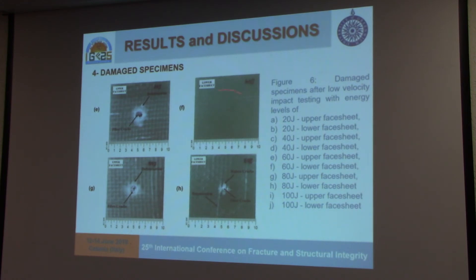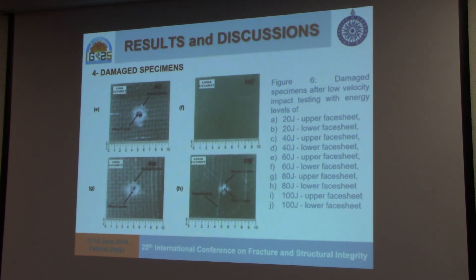For 60 joules, we had no damage on the lower face sheet, but fiber cracks and delamination started on the upper face sheet. As we increased the energy levels, the impact area was also increasing. At 80 joules — the first energy level where we saw damage on the lower face sheet — fiber cracks and delamination appeared on the upper face sheet, and delamination along with fiber cracks and matrix cracks also occurred on the lower face sheet.